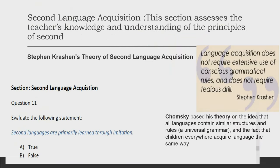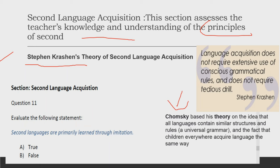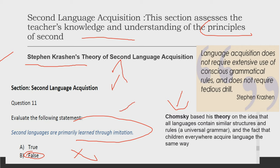The second language acquisition section assesses the teacher's knowledge and understanding of the principles of second language acquisition. There are different theories — for example, Stephen Krashen's theory says language acquisition doesn't require extensive use of conscious grammatical rules and doesn't require tedious drill. Or Noam Chomsky's theory, based on the idea that all languages contain similar structures and rules — a universal grammar — and that children everywhere acquire language the same way. A sample question: evaluate the statement 'Second languages are primarily learned through imitation.' As per the answer key, the answer is false.